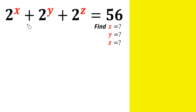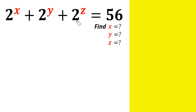What are we going to do solving this kind of question in which a lot of people don't even know where to start from? 2 raised by the power of x plus 2 raised by the power of y plus 2 raised by the power of z equals 56, and we need to know what the values of x, y, and z are going to be.